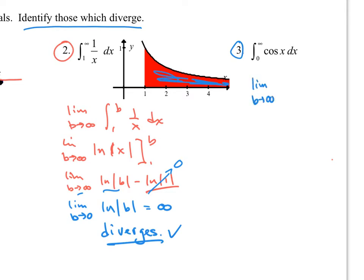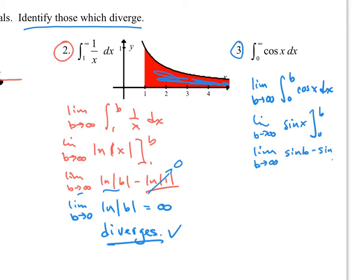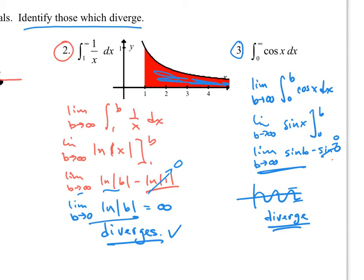Let's see what happens with example 3: the limit as b goes to infinity of the integral from 0 to b of cos(x) dx. The antiderivative of cosine is sine, so we get limit as b goes to infinity of sin(b) minus sin(0). Sin(0) goes to 0. Now, does sine ever converge to a specific value? It always shifts between -1 and 1 — it does not. So sine of b does not land on one exact value as b goes to infinity, and this one also diverges.